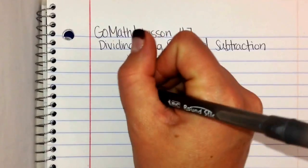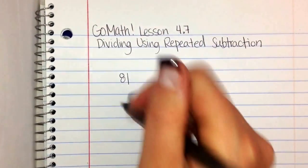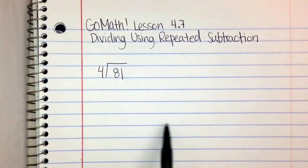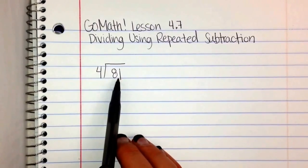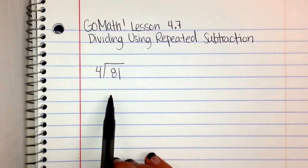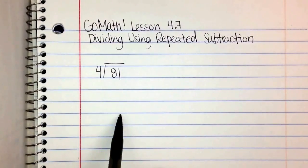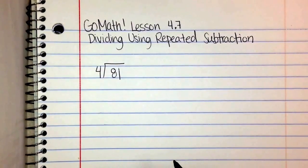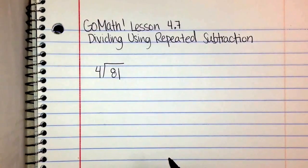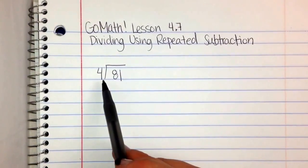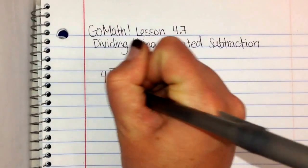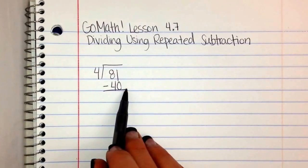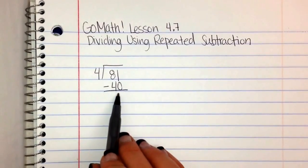Let's say we have a problem like 81 divided by 4. Now, instead of doing the traditional division where I do it one number at a time, I'm going to subtract multiples of 4 until I get to 0. I could do 81 minus 4, minus 4, minus 4 a whole bunch of times until I get to 0, but that would take a really long time. So instead I'm going to take away multiples of 4 that will get me closer. I'm going to think of an easy multiple of 4, such as 40, and take 40 away from 81.